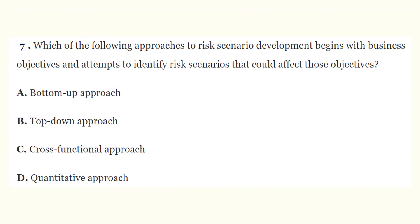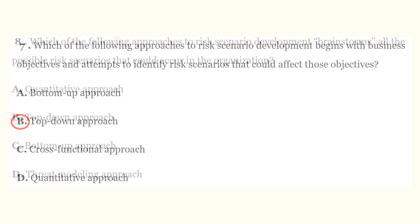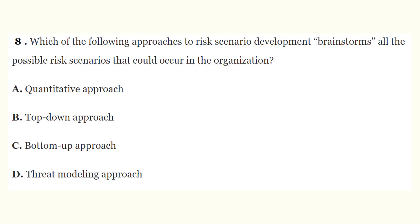Question 7: Which of the following approaches to risk scenario development begins with business objectives and attempts to identify risk scenarios that could affect those objectives? The correct answer is a top-down approach. Question 8: Which of the following approaches to risk scenario development brainstorms all the possible risk scenarios that could occur in the organization? The correct answer is the bottom-up approach.